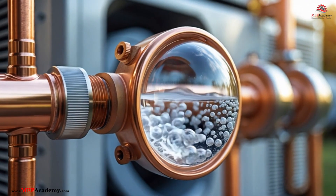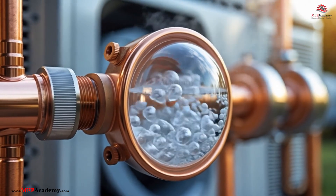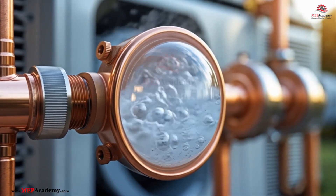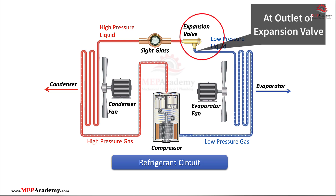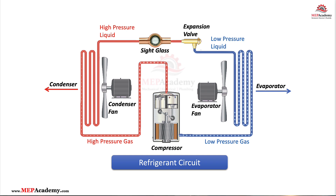Flash gas is the portion of a refrigerant that instantly boils, or flashes, into a vapor when it experiences a sudden pressure drop. It most often occurs at two critical places in the refrigeration cycle: at the expansion valve outlet, and in the liquid line if the system isn't charged or sized correctly. Here's the science.